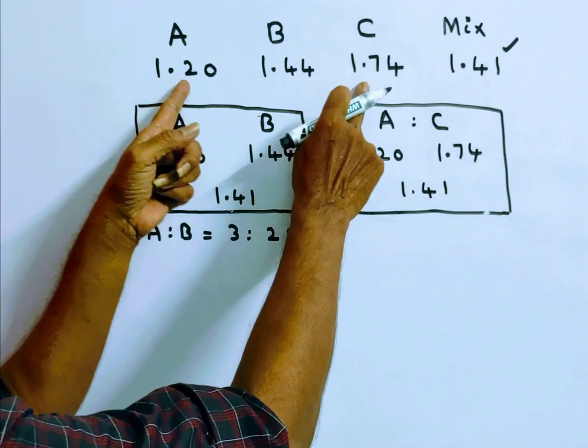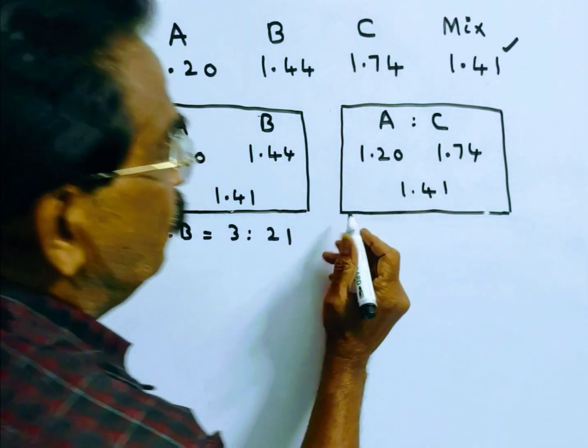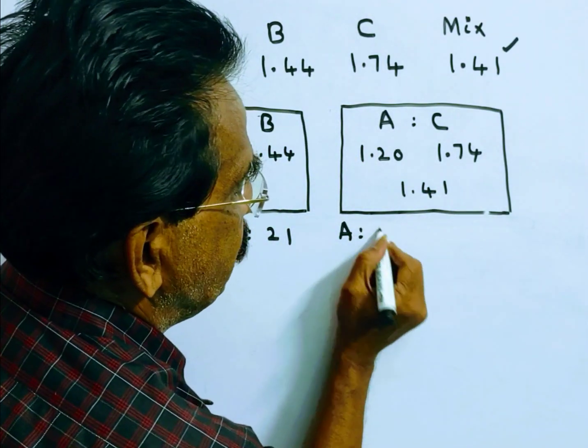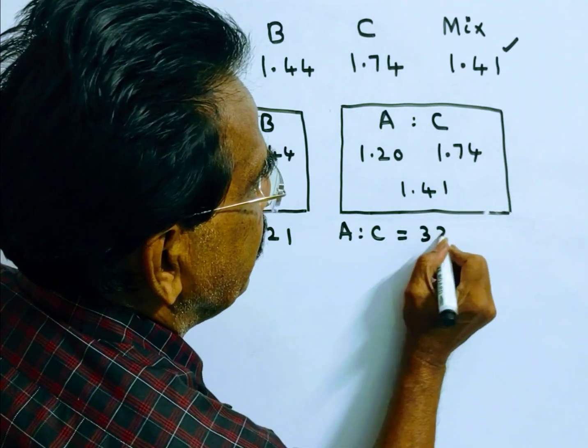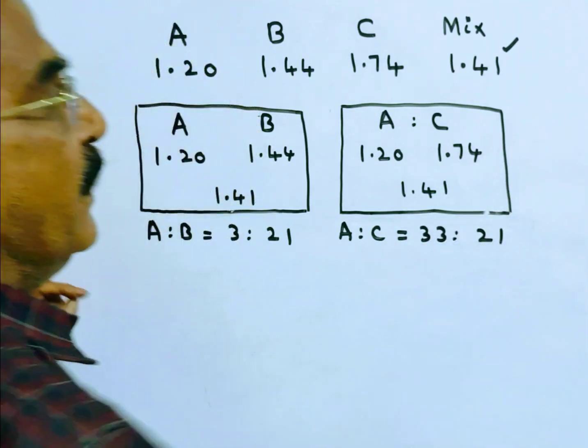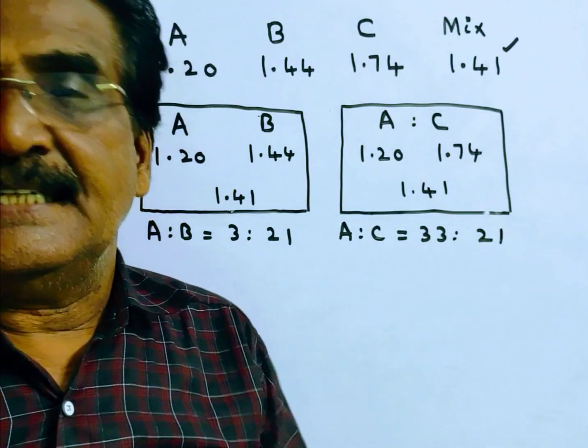So now let us find the ratio A and C. A is to C is equal to 33 is to 21. Now, friends, let us find A is to B is to C.